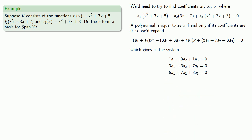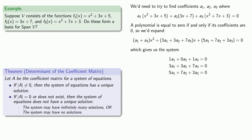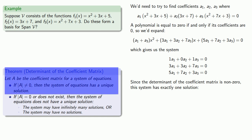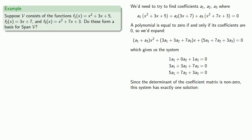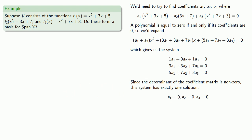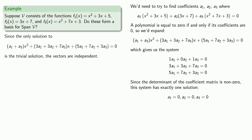After the dust settles, we get the polynomial: (a1 + a3)x² + (3a1 + 3a2 + 7a3)x + (5a1 + 7a2 + 3a3) = 0. We want to solve this system, so we set it up as a system of linear equations. The determinant of the coefficient matrix is non-zero, so the system has exactly one solution. By inspection, that solution is a1 = a2 = a3 = 0 — the trivial solution — meaning the vectors are independent.